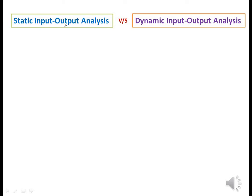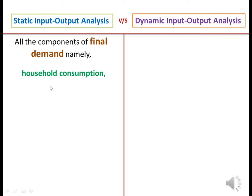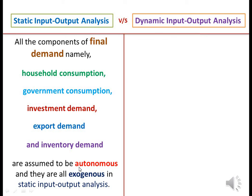Static Input-Output Analysis versus Dynamic Input-Output Analysis. All the components of final demand — namely household consumption, government consumption, investment demand, export demand, and inventory demand — are assumed to be autonomous and they are all exogenous in Static Input-Output Analysis.